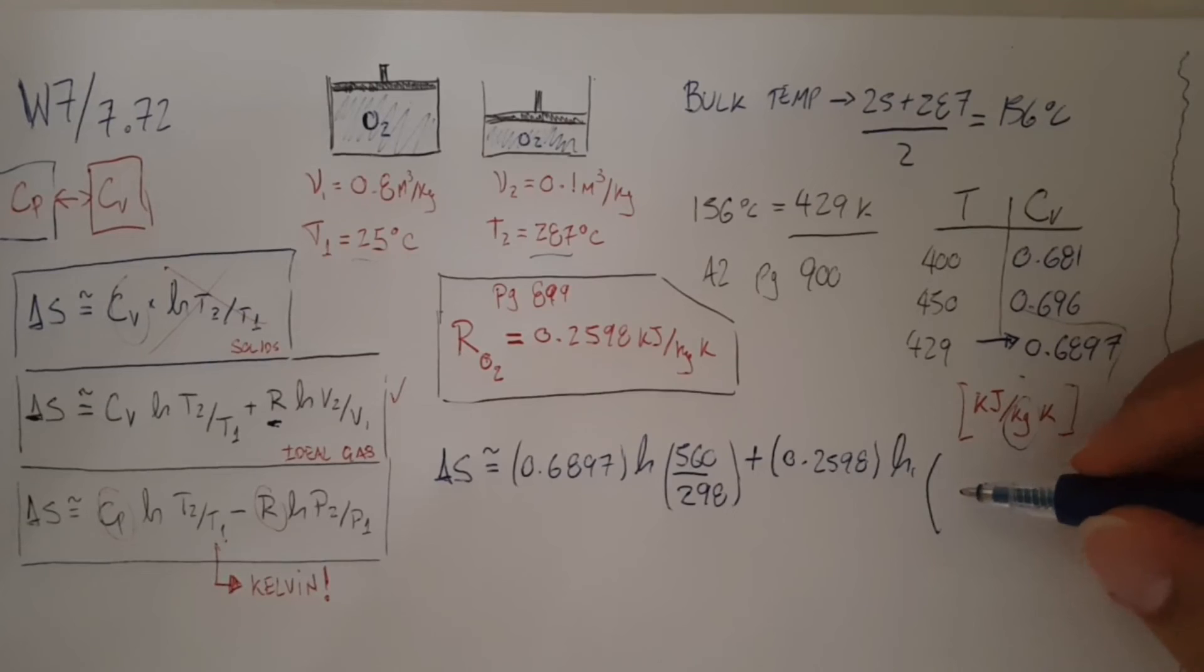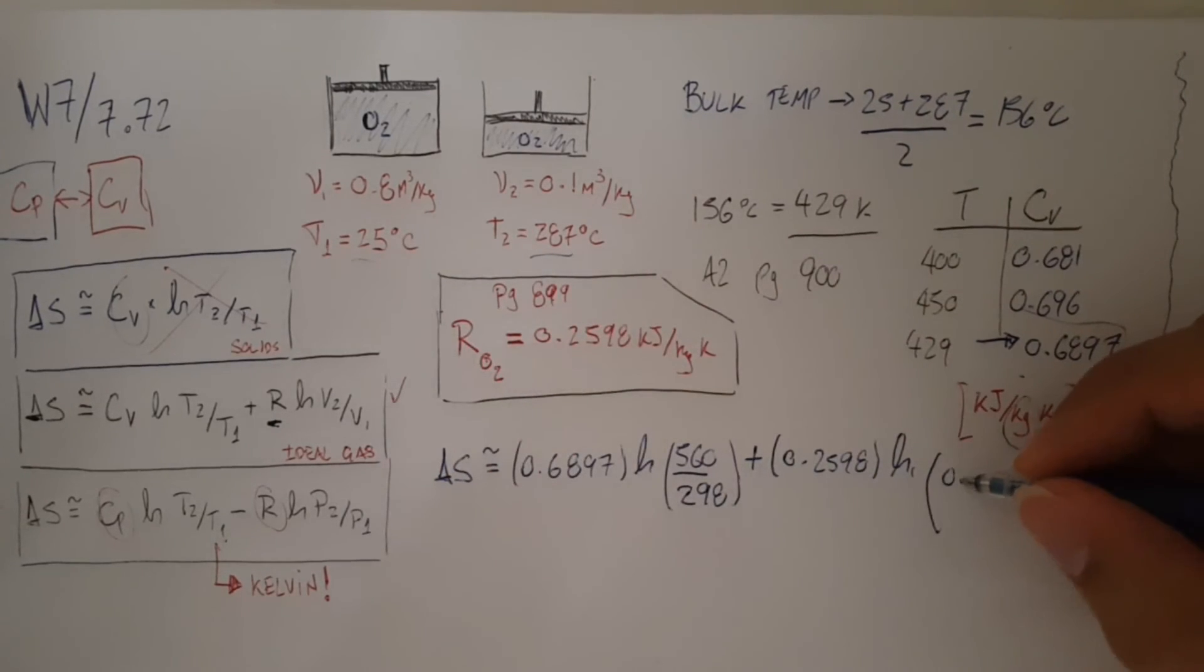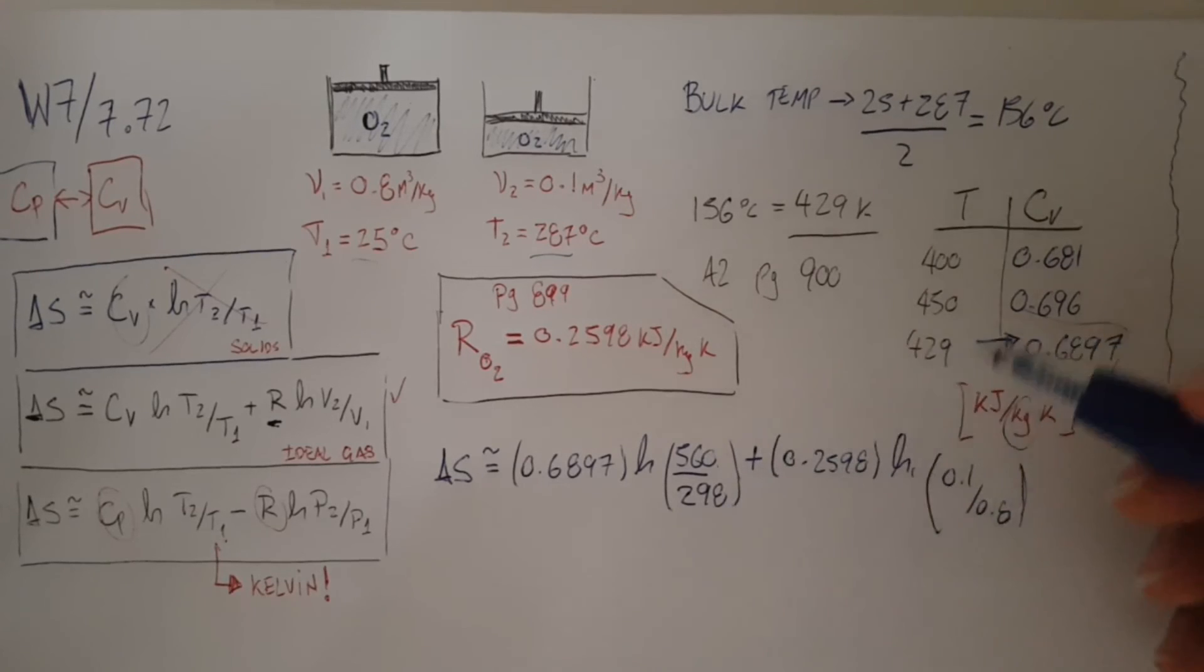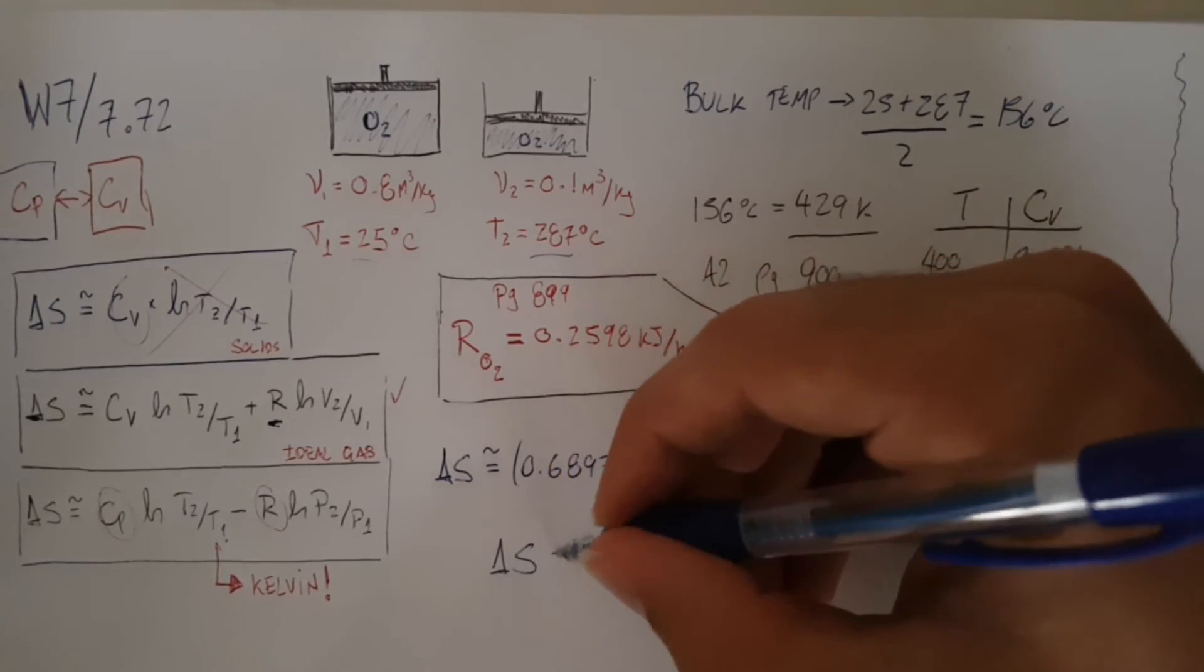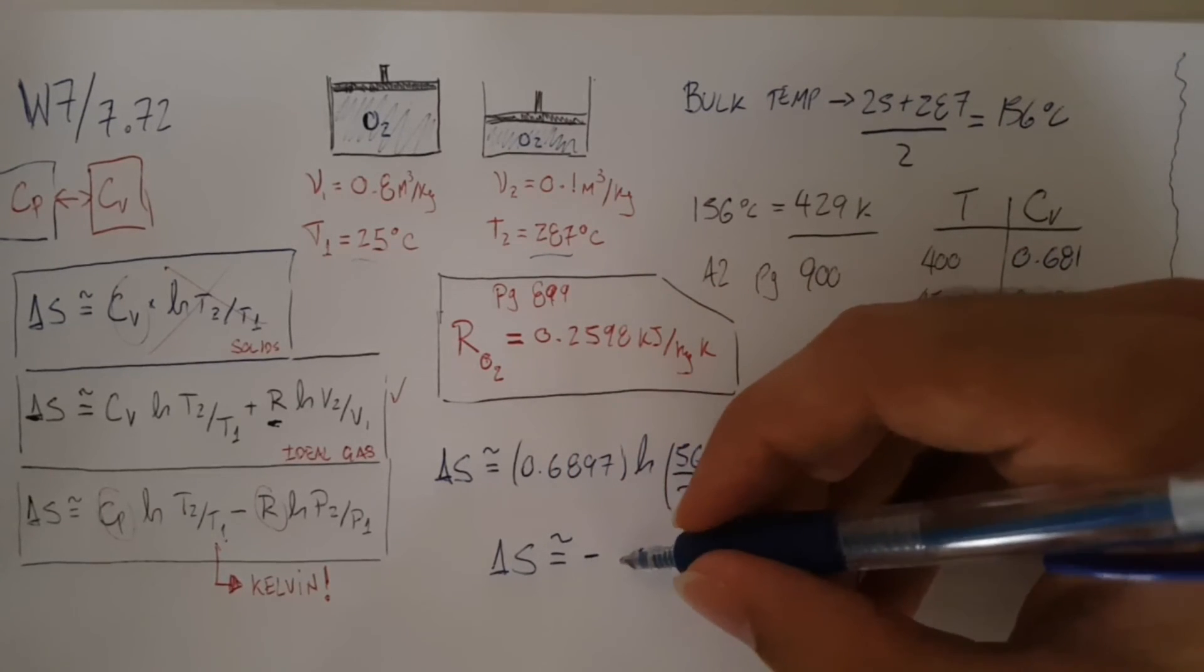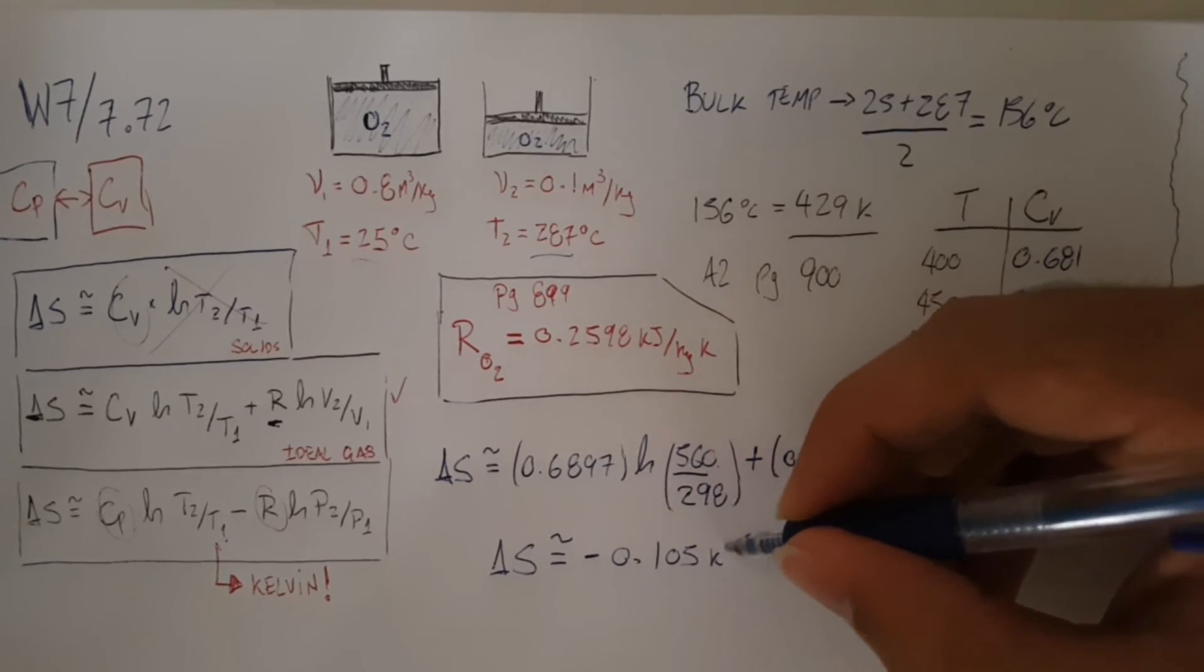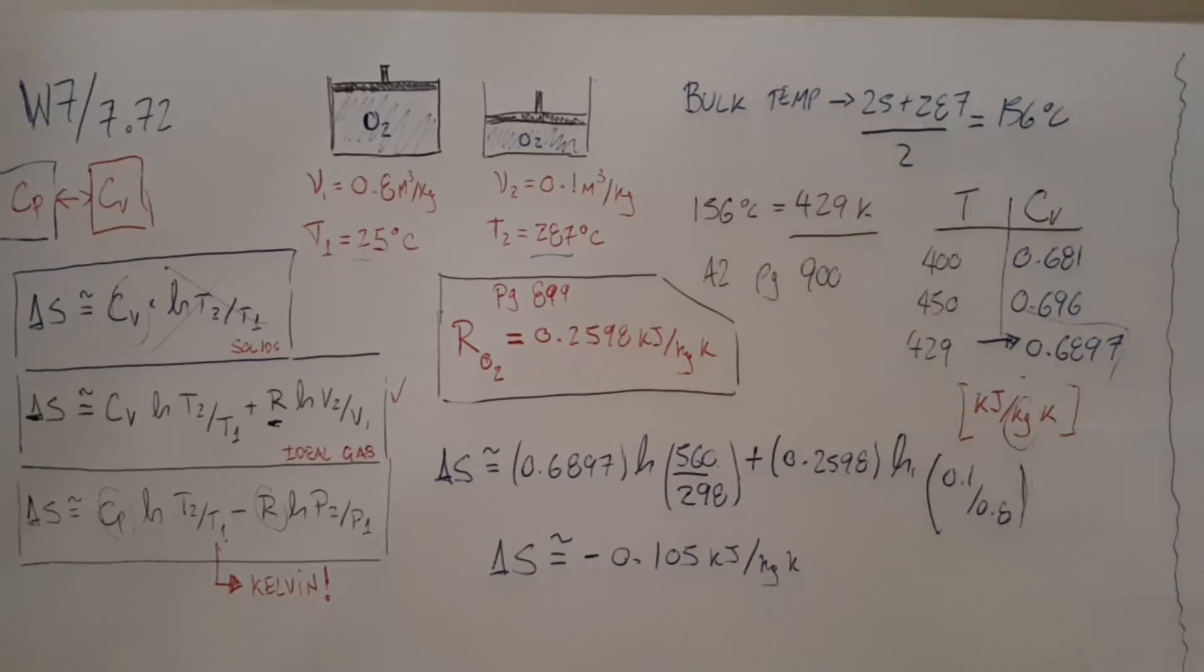And then our final one is 0.1, and our initial one is 0.8. As long as these guys are the same unit, they go away. These guys are the same unit, they go away. Sum this up. So delta S is approximately negative 0.05 kilojoules per kilogram Kelvin. As easy as that, we have our value.